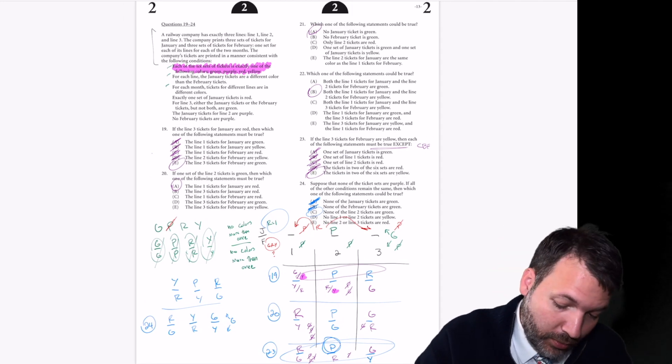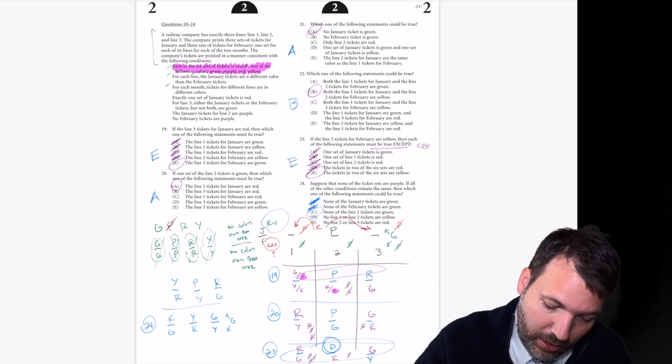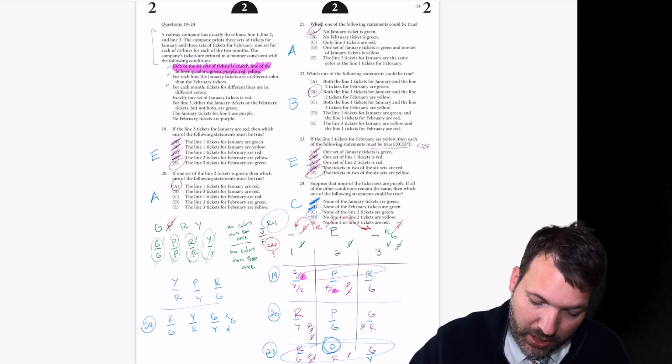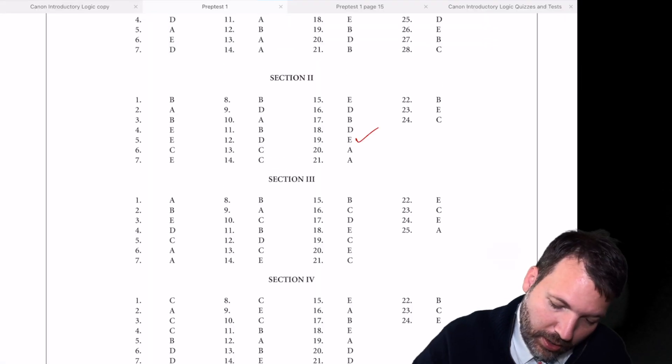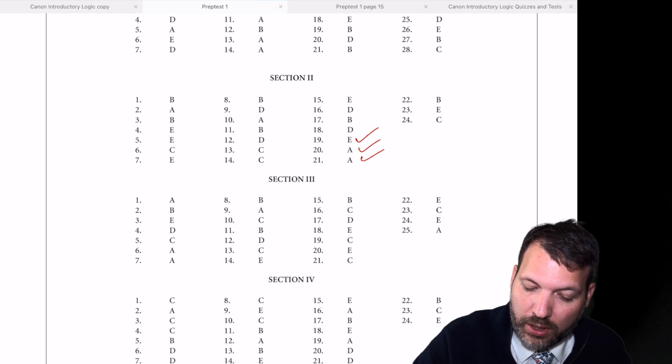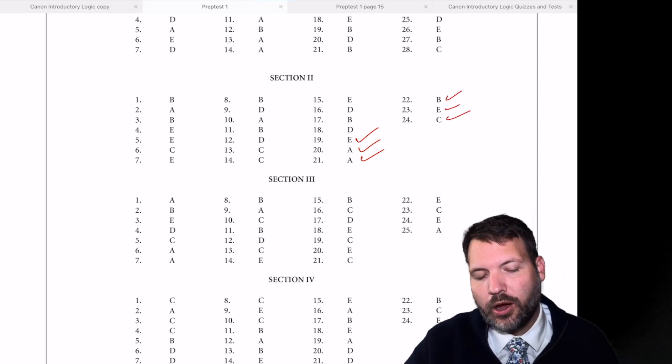All right, moment of truth. We've got E, A, A, B, E, and C. Awesome. We did it. Got them all right.